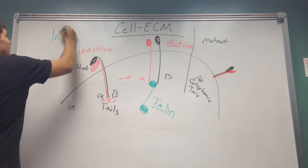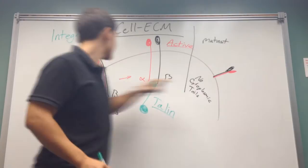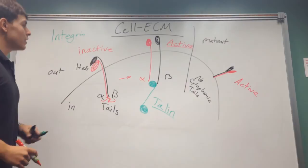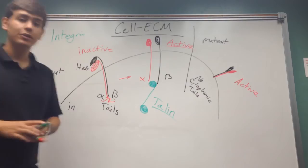Because, as we mentioned, it's not the fact that they're bound together, it's the fact that the alpha and beta tails are bound to each other. So, we'll, once again, have an active integrin. All throughout this, whenever it gets activated, then it can interact with things in the extracellular matrix, as we talked about.